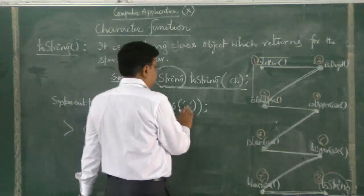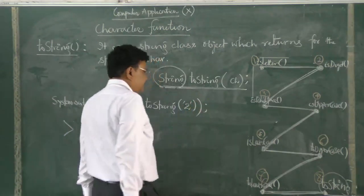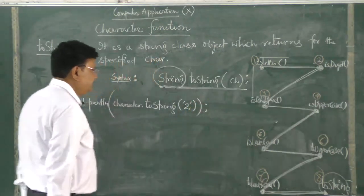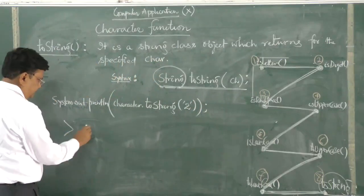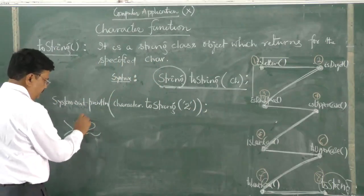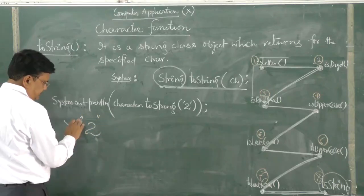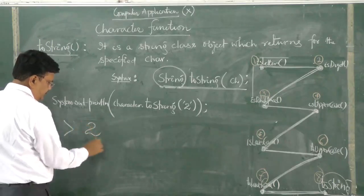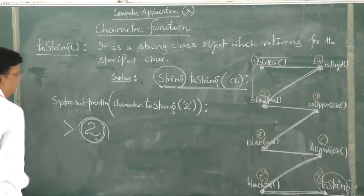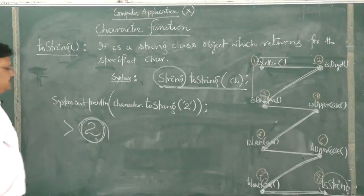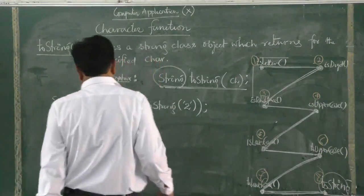Now, if I write, for example, '2' — 2 is a character. The answer will be 2. Normally this should be within double quotes as a string, but the output will be 2 only. It converts the character into string.